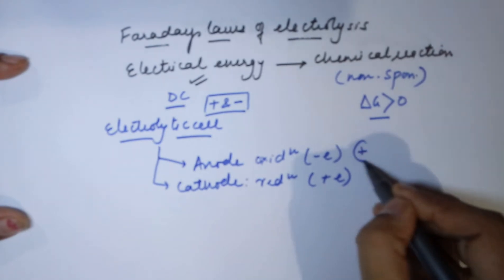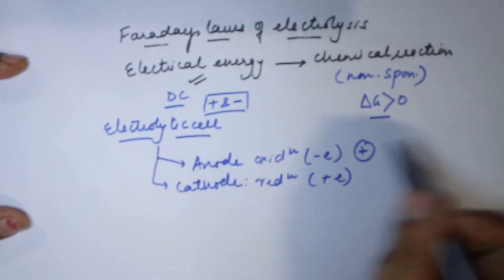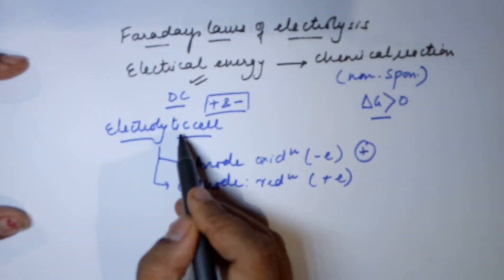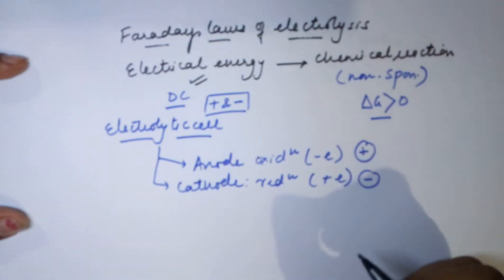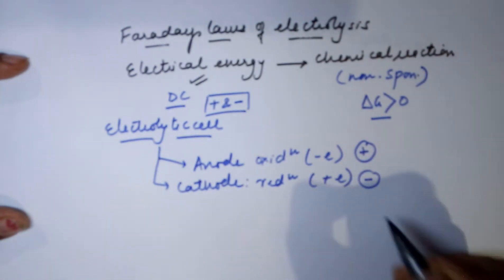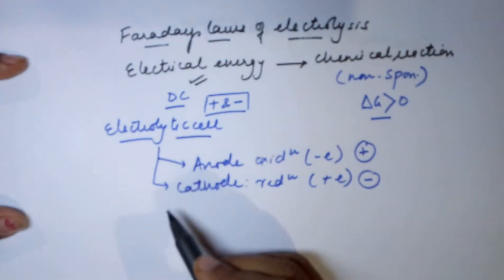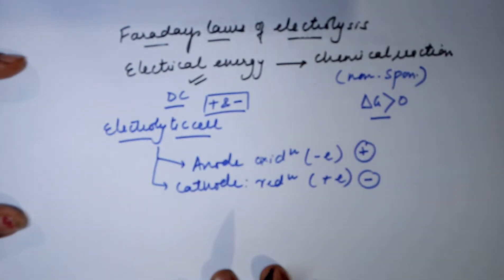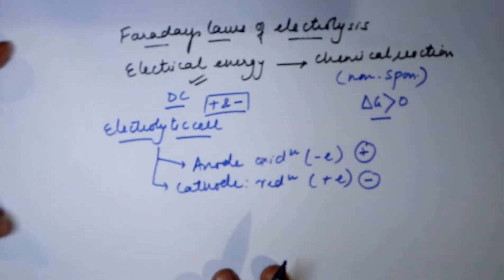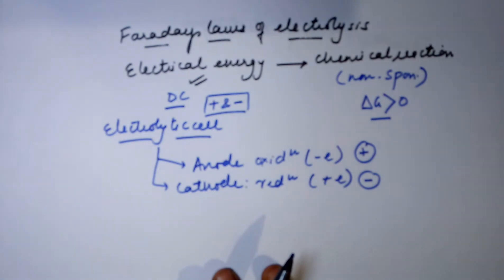Anode is always the positive terminal if we are referring to an electrolytic cell, and cathode is always the negative terminal in an electrolytic cell. Now, before I move further towards the laws of Faraday, let me give you a brief quantitative treatment of electrolysis.